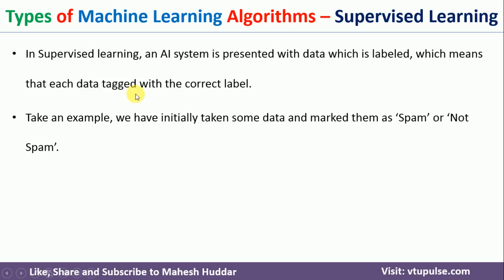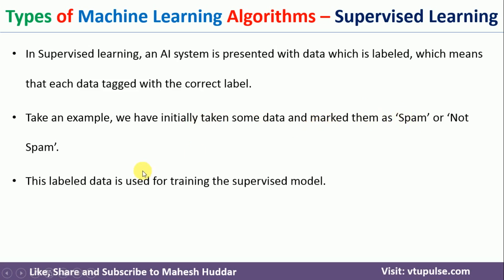Let us take an example to understand this clearly. Say we have collected some set of emails, and along with each email, we assign a label — for example, email is spam or email is not spam. So you have the email along with its assigned label. Such data is called labeled data.